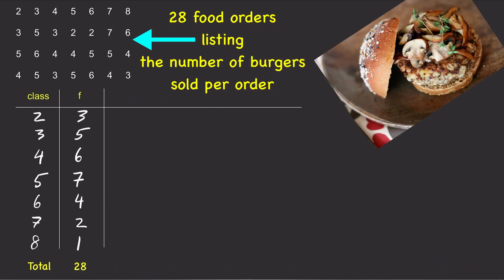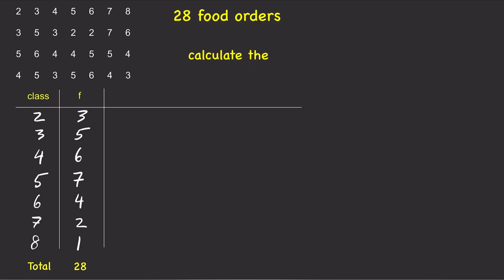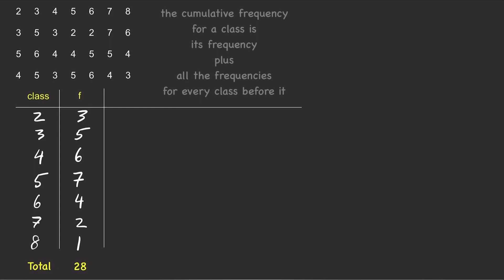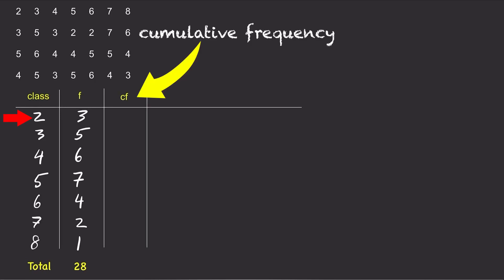20 orders were made and the number of burgers sold per order are listed here. Let's calculate the cumulative frequency and the cumulative relative frequency. Remember, the cumulative frequency for each class is simply the frequency for a class plus all the frequencies for every class that came before it. For the first class, the frequency is 3.